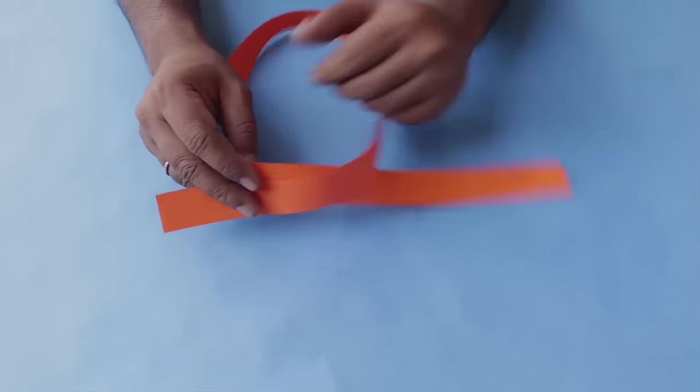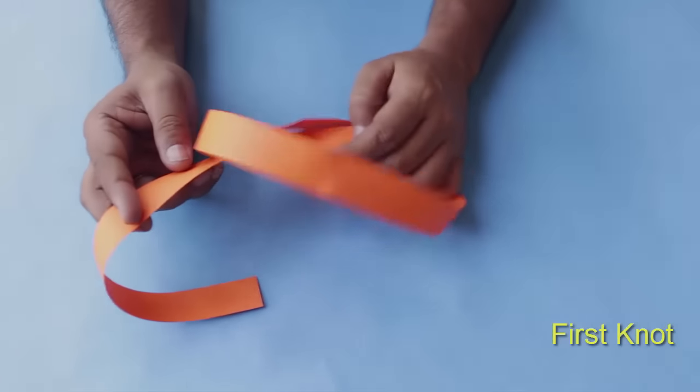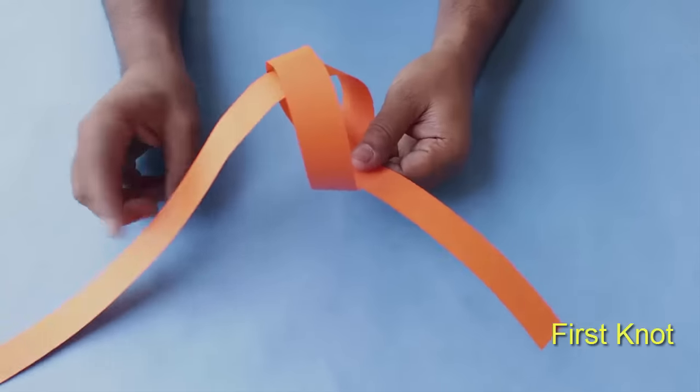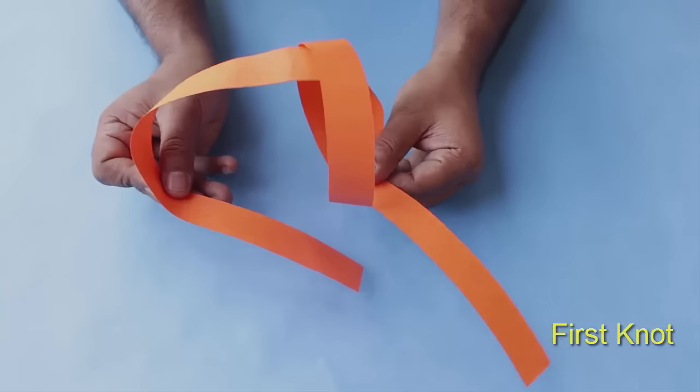First, take a parallel strip of paper and tie a knot. If we pull both ends of the strip, we get a pentagon. But to make a seven-sided polygon, we will have to tie two knots.